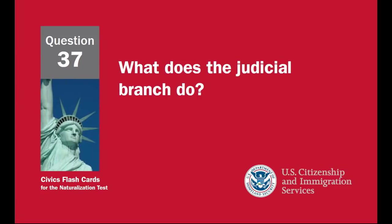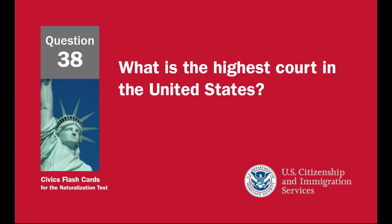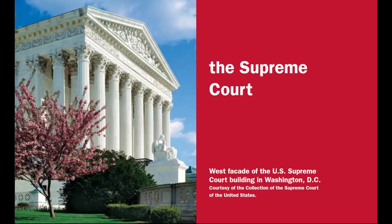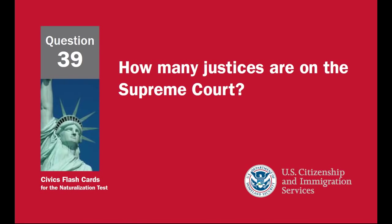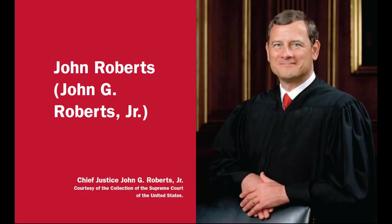What does the judicial branch do? Reviews laws, explains laws, resolves disputes and disagreements, and decides if a law goes against the Constitution. What is the highest court in the United States? The Supreme Court. How many justices are on the Supreme Court? Nine. Who is the Chief Justice of the United States now? John Roberts, John G. Roberts Jr.